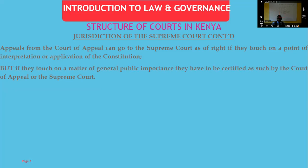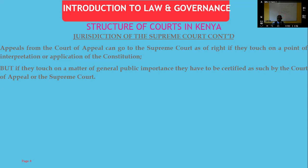If the matter touches on a matter of general public importance — that is, it affects the general public at large — then it has to be certified either by the Court of Appeal or by the Supreme Court. The kind of certification done by the Court of Appeal, if it certifies you can go to the Supreme Court, is also subject to challenge in the Supreme Court. Somebody can raise an appeal on that issue and say the Court of Appeal was wrong in allowing the matter to come to this court.